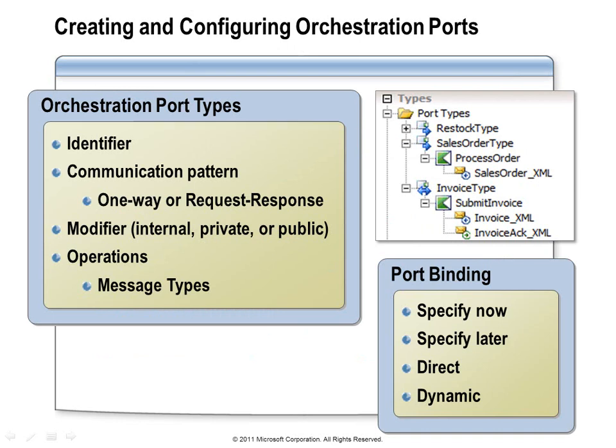What exactly are we telling BizTalk when we set up port types and logical ports? When we declare a port type, we give it a name and declare a communication pattern — either a one-way port type or a two-way port type — not a direction, just a pattern. We worry about direction later. Another critical piece of information is the set of operations our port type defines. Each operation specifies message types: an operation on a one-way port type specifies one message type, while an operation on a request-response port specifies message types for both the request and the response.